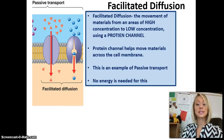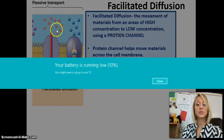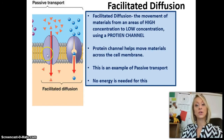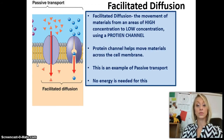Facilitated diffusion is the same as regular diffusion — you're still moving from an area of high concentration to an area of low concentration. The only difference is you're using a protein channel, because these molecules are too big to fit through the regular cell membrane as they can in regular diffusion.